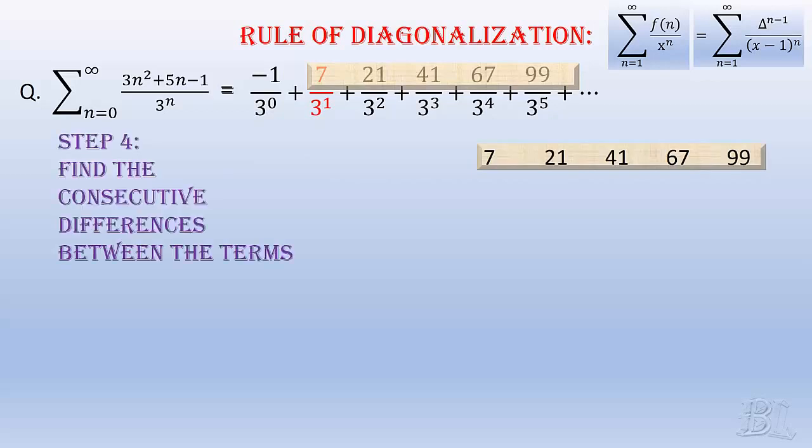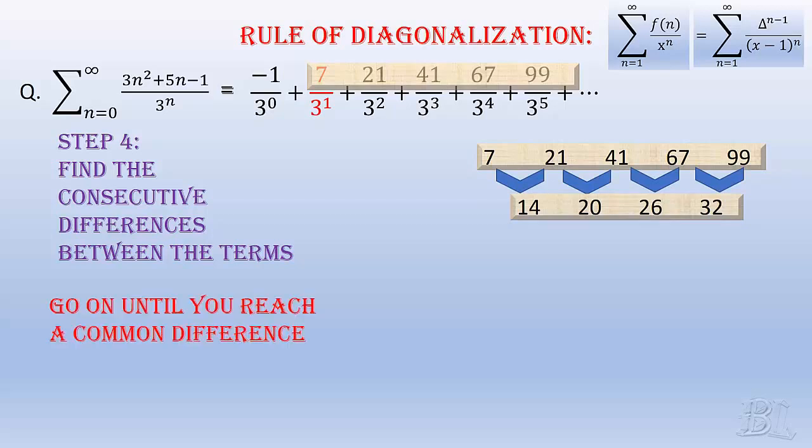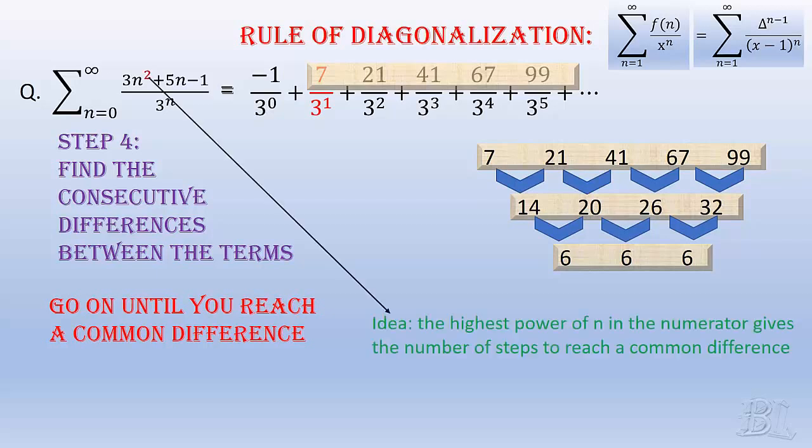Then, we find the differences of the consecutive terms, as 21 minus 7 equals 14, 41 minus 21 equals 20 and so on. And we go on finding the differences until we reach a common difference. So, we do 20 minus 14 equals 6, 26 minus 20 equals 6 and so on, and we stop because we got the common difference as 6. There's an idea to find how many steps are needed to reach the common difference. Just look at the highest power of n in the numerator, that is, 2 in this case, hence, we need two steps to get the common difference.